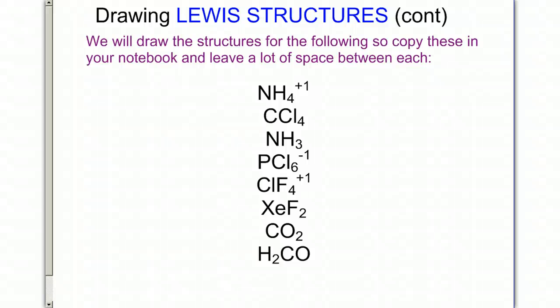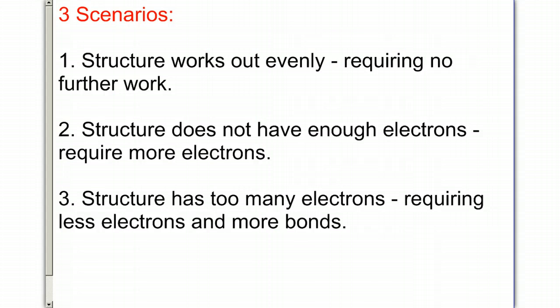Okay, so here are several examples of drawing Lewis structures. If you want to pause and copy them, you can do that now, and then we're going to work through them. You have three scenarios. Some structures work out evenly requiring no further work. Some structures don't have enough valence electrons, so we'll have to put more. And some structures have too many electrons, requiring less electrons and more bonds.